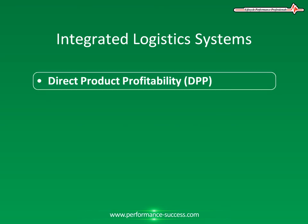Direct Product Profitability (DPP) is a technique of allocating all of the appropriate costs and allowances to a given product. All distribution costs are therefore assigned to a specific product rather than taking an average over the whole product range.